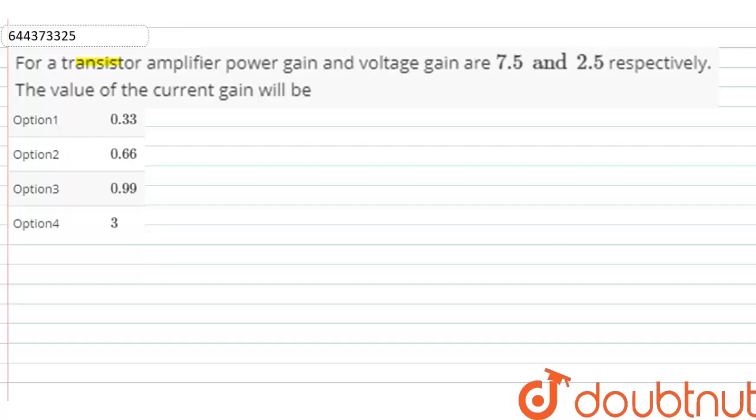The question is: for a transistor amplifier, power gain and voltage gain are 7.5 and 2.5 respectively.